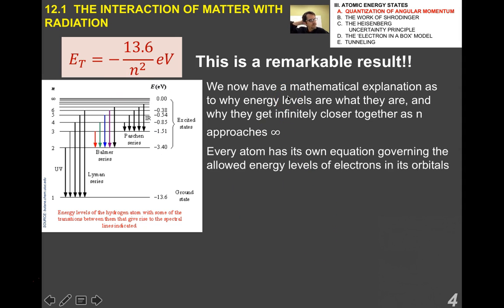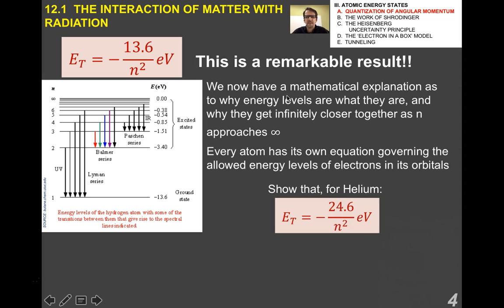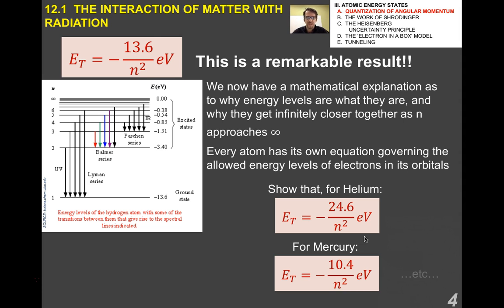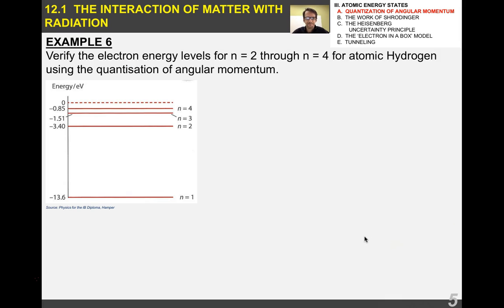It turns out that every atom, every element, has its own equation governing the allowed energy levels of electrons in its orbitals. For example, for helium we have one equation, for mercury we have another, and so on — which helps to explain those energy level diagrams.